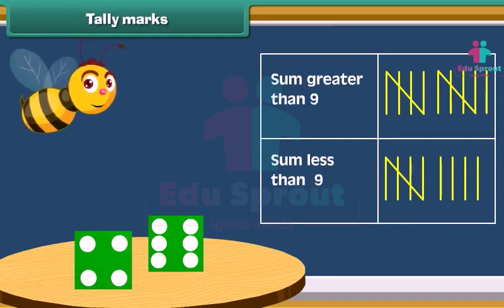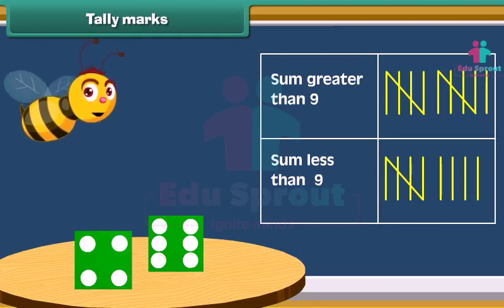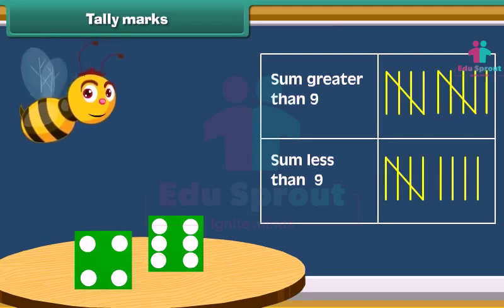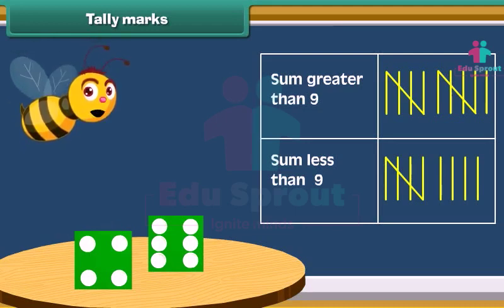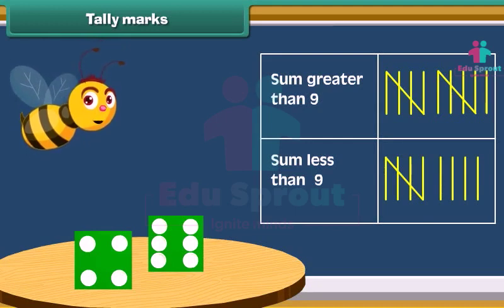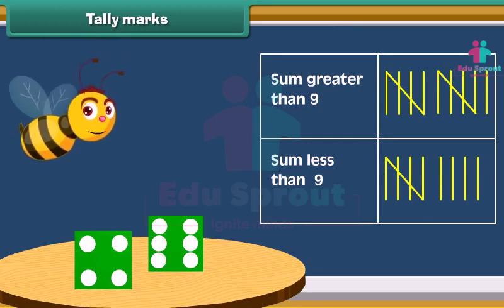Instead of counting each mark one by one, skip the count by fives and add the remaining marks to the count. This makes counting quick.